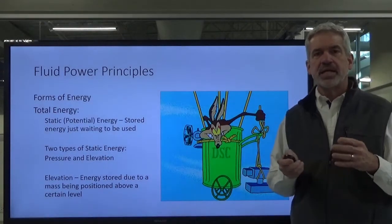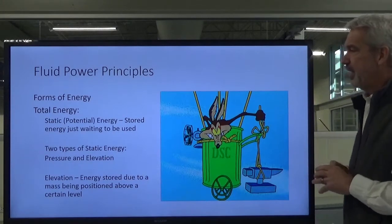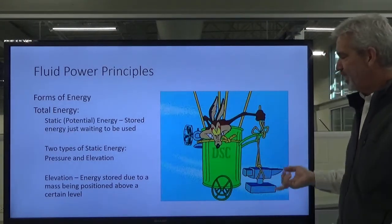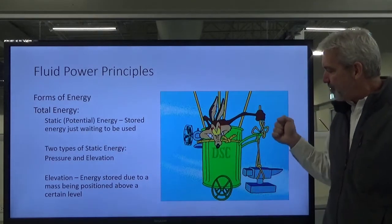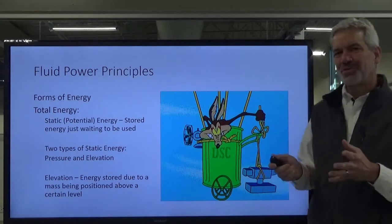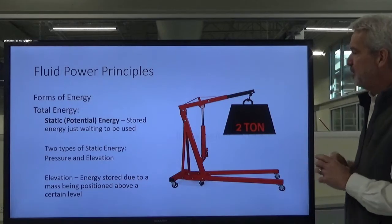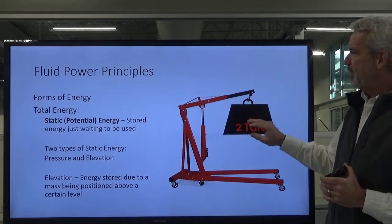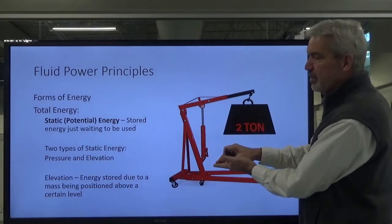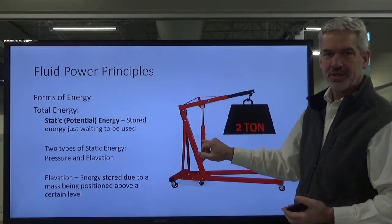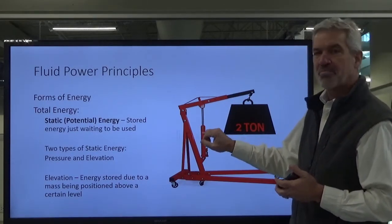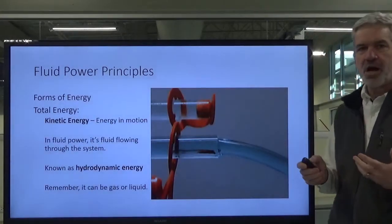The other type of static energy is elevation. This is energy stored when you hold a mass above a certain point above the ground. Think of Wile E. Coyote holding an anvil outside of a hot air balloon — there's static energy with downward pressure that can be applied. A more practical application: you've got a cherry picker or engine hoist with a two-ton weight on it. That weight is connected to a cylinder and applying pressure to it — so we are holding two tons of static pressure in the cylinder.